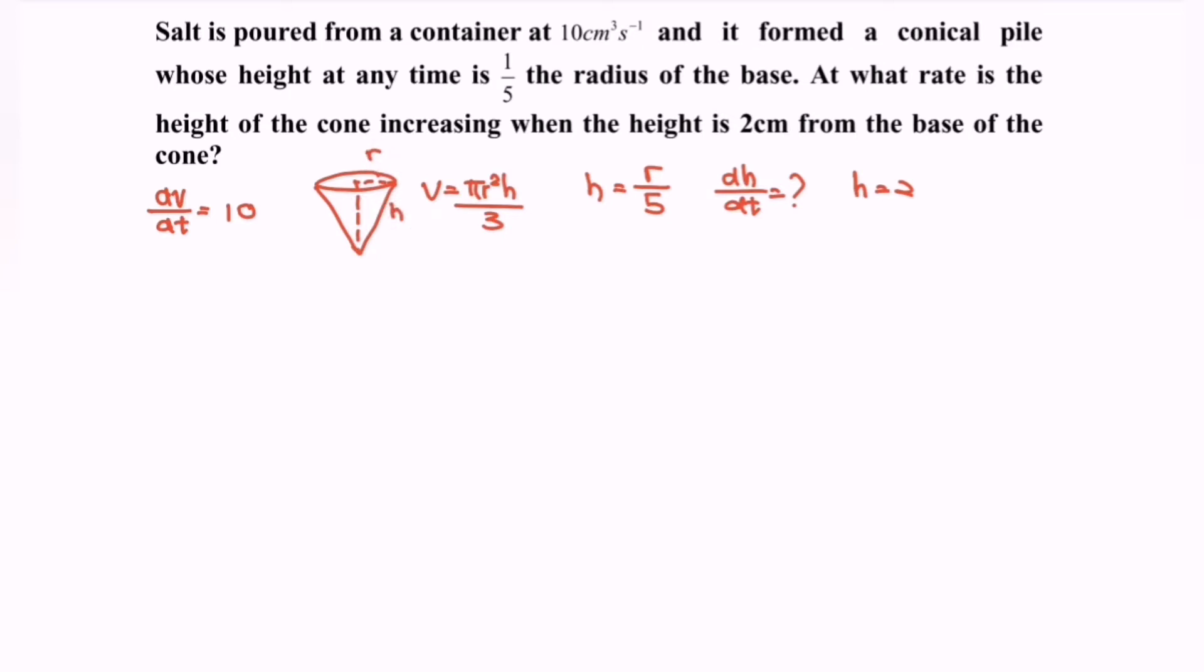Second step is to draft the chain rule. So in here we are interested in dh/dt equals to dV/dt multiplied with dh/dV.